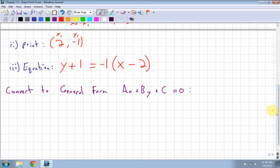Next thing I want to do is I want to convert this to ax plus by plus c equals 0, general form. And there's been a few questions on this. First thing I have to do is multiply the negative 1 into the brackets to expand it out. So I get y plus 1 equals negative 1x, or just negative x,